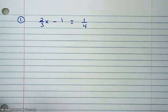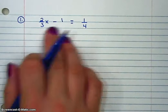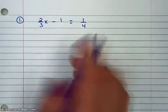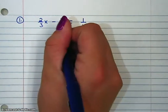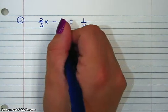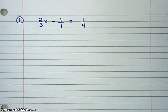Alright, today we're going to solve this problem by clearing fractions. The first thing I need to do is make sure I have fractions, which I do — 2 thirds, 1 fourth. I'm going to go ahead and make this minus 1 a fraction as well, by putting it over 1. You can always make an integer a fraction by putting it over a 1.